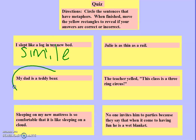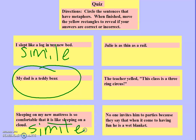'My dad is a teddy bear' — that is a metaphor, comparing the dad to a teddy bear, so you can imagine him being warm, comforting, and huggable. 'Sleeping on my new mattress is so comfortable that it is like sleeping on a cloud' — this uses 'like,' so it is another simile. 'Julie is as thin as a rail' — comparing her to a railing, meaning she's very thin. 'The teacher yelled: this class is a three-ring circus' — also a metaphor, comparing the class to a circus, probably meaning everything was going crazy that day.